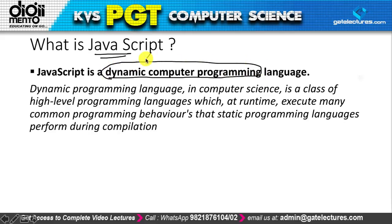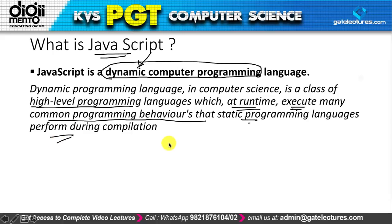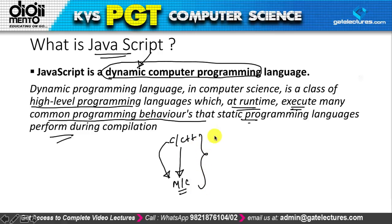JavaScript is a dynamic computer programming language. 'Dynamic' means it is a class of high-level programming language which at runtime executes many common programming behaviors that static programming languages perform during compilation. For example, C and C++ go through compilation stages — lexical analyzer, syntax analyzer, semantic analyzer, intermediate code generator — to ultimately produce machine code.